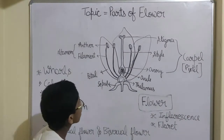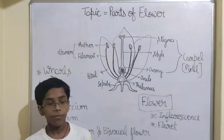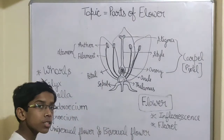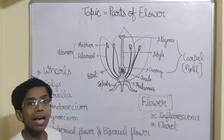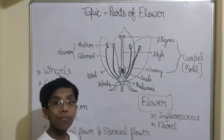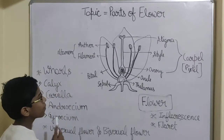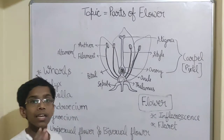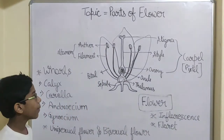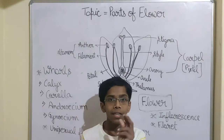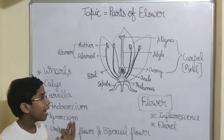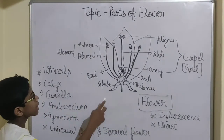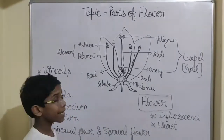We are talking about calyx. What is calyx? Calyx is the first whorl and it is the outermost whorl. It consists of sepals. Sepals are green in color and they protect the bud. They protect the bud when the flower is in the bud stage.